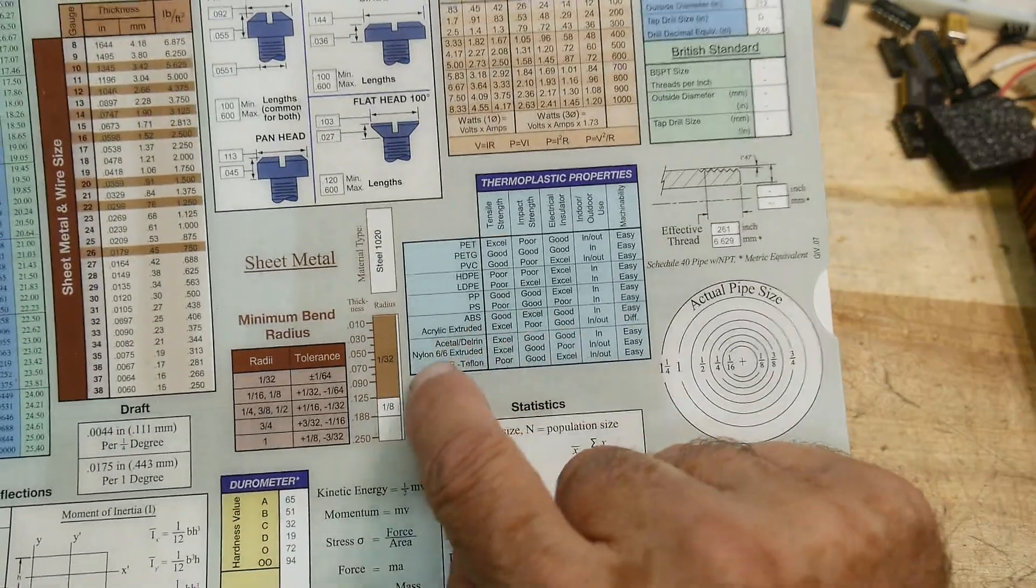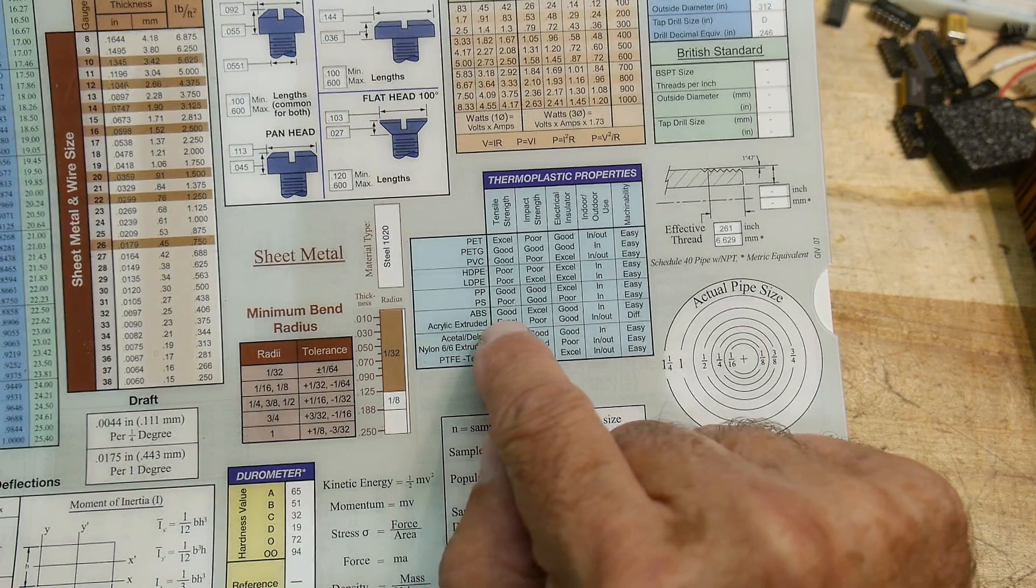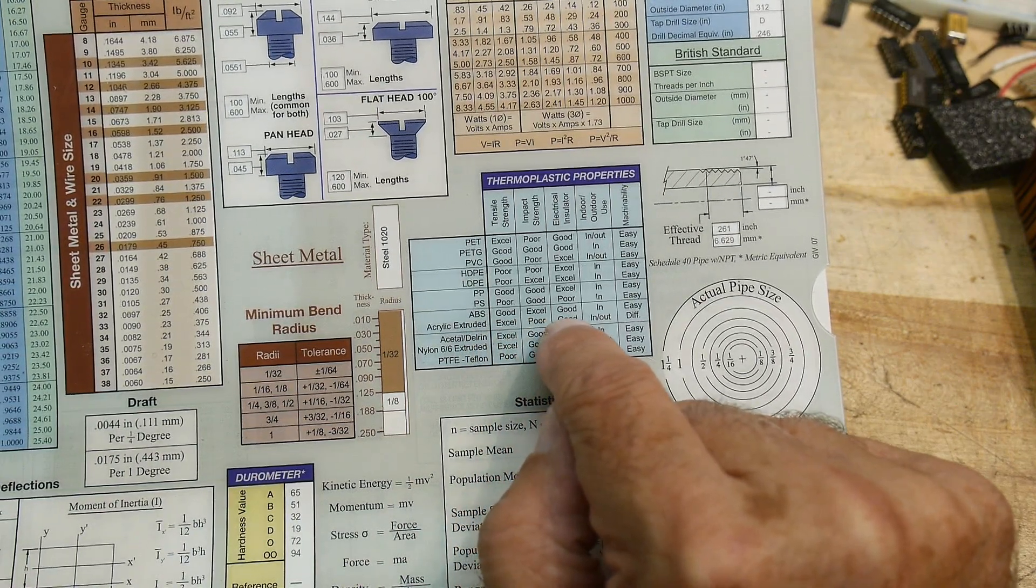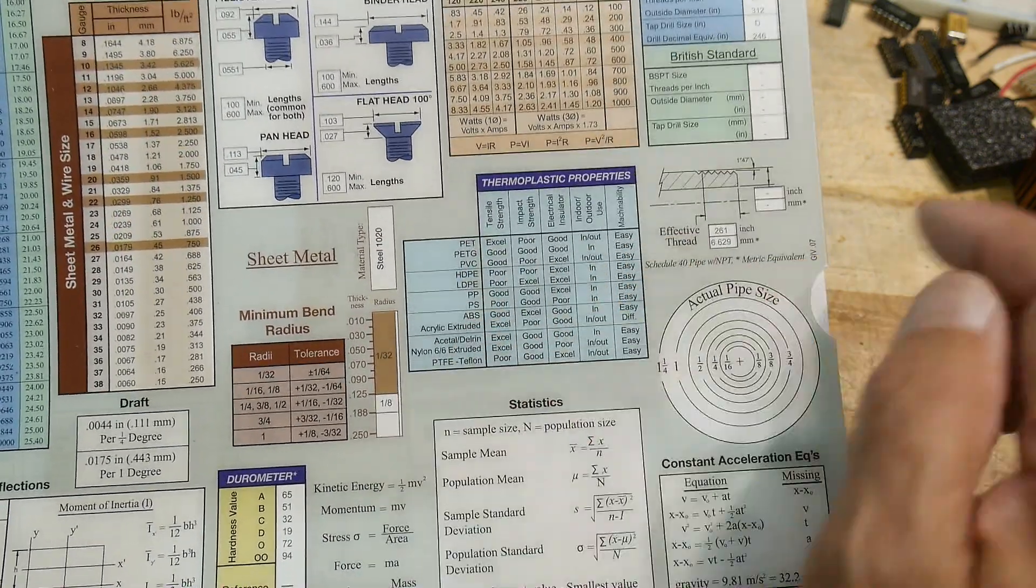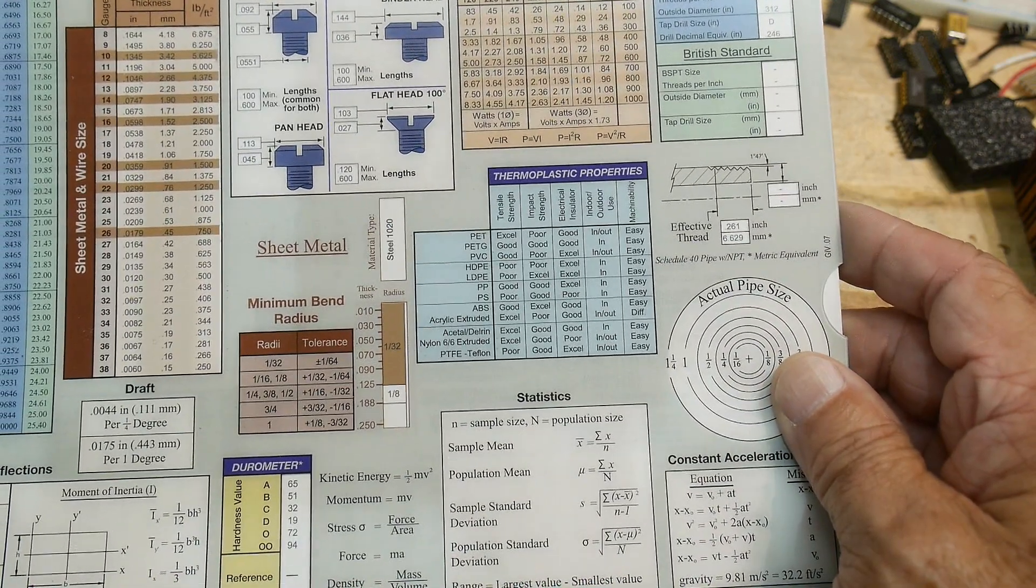Thermoplastic properties. Oh, that's kind of a nice little chart. What ABS is good for tensile strength, excellent for impact strength, good for an insulator. Yeah. And then, see, this might be good for, like, if you're 3D printing, choosing which plastic to use.